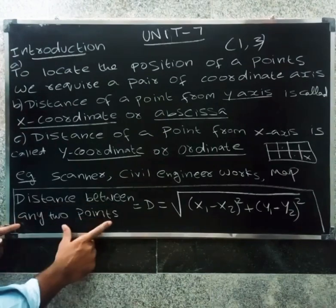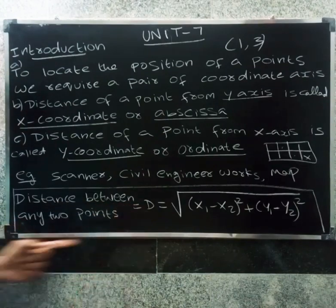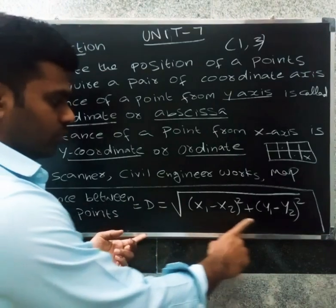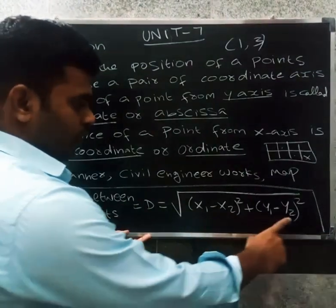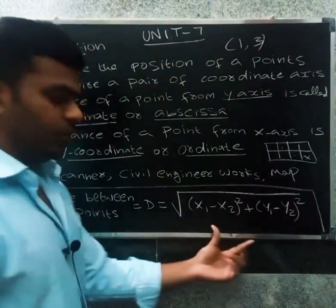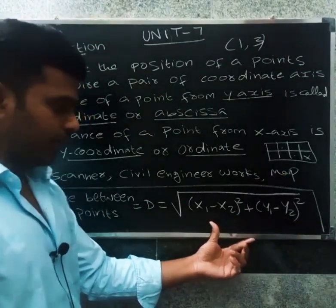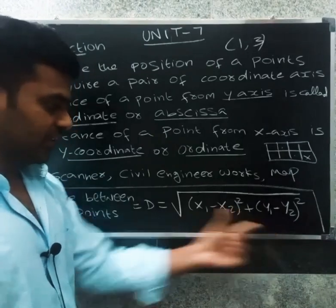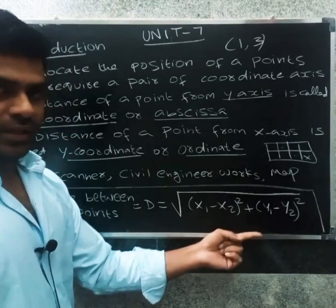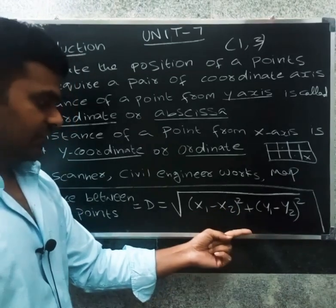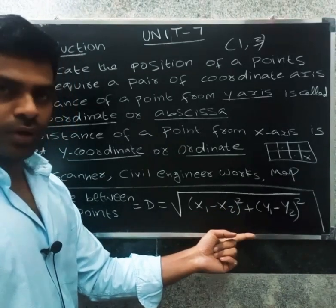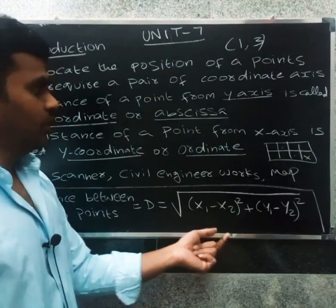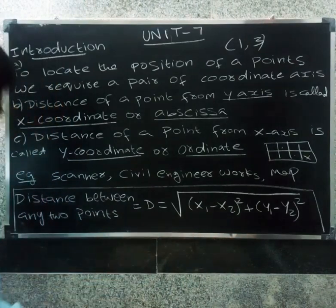Now, the distance between any two points is equal to the formula: the square root of (x1 minus x2) whole square plus (y1 minus y2) whole square. Given two points, we can find the distance between them using this formula.